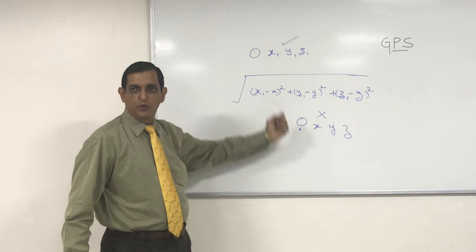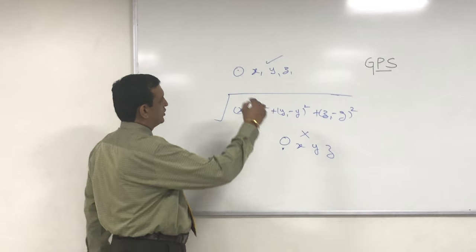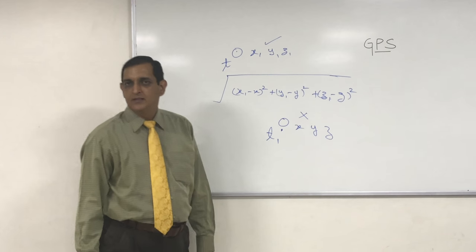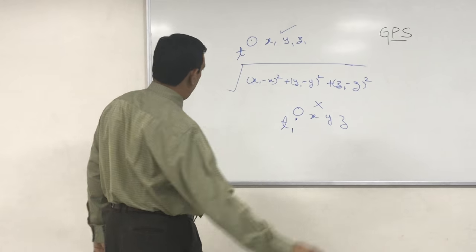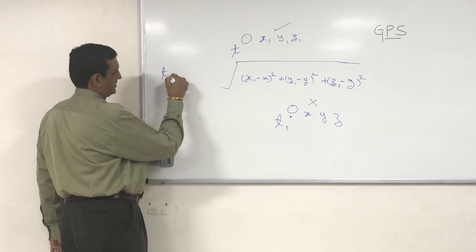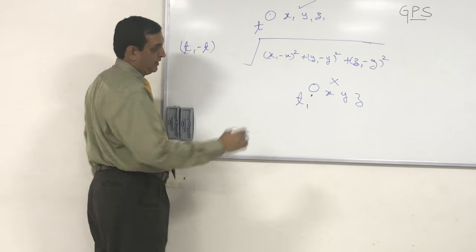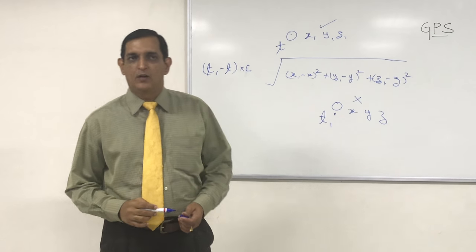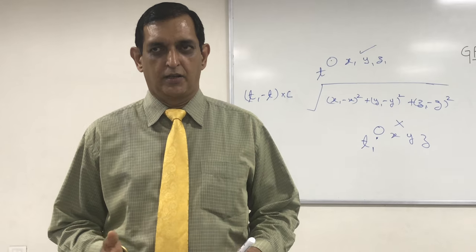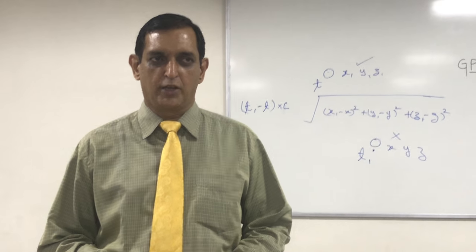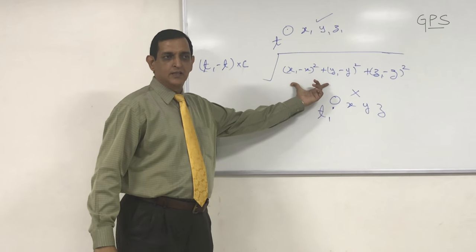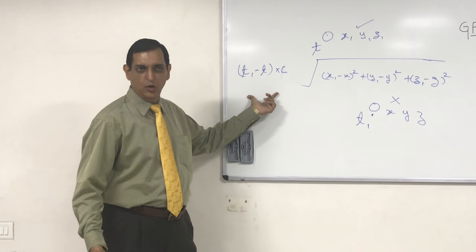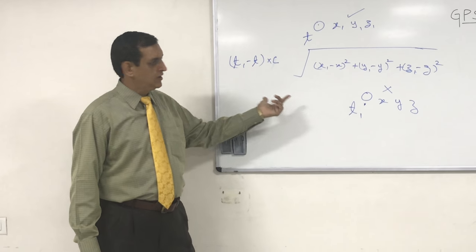We are observing the satellite, which is transmitting a CA code that we are receiving. The satellite transmits the code at time T and we receive it at time T1. So the travel time is T1 minus T. Multiplying by C, the velocity of electromagnetic waves — 3 times 10 to the power 8 meters per second, or 3 times 10 to the power 5 kilometers per second — gives us the distance.